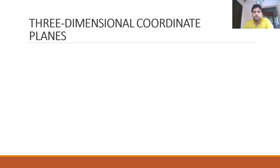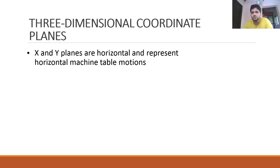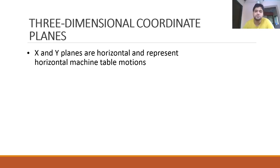Before using CNC software, you need to understand coordinate systems. The XY planes are horizontal and represent horizontal machine table motion. Z represents vertical tool motion. Understanding these coordinate systems helps you understand why specific codes are generated and what alternatives are possible — essential knowledge if you are going to operate or supervise CNC machines.